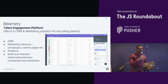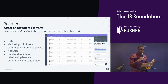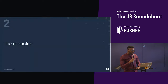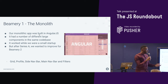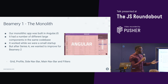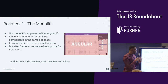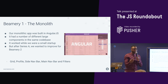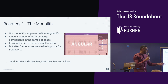So, Beamery. Beamery is a talent engagement platform. It allows you to connect to your candidates and helps you keep track of their performance, take notes, and basically just maintain a healthy relationship with them. So, the monolith. Beamery 1 is built in Angular and it's a monolithic application — a single-tier application. This means that all of the components in this single application are in Angular.